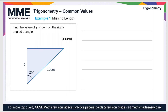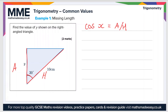Now let's look at an example question — finding a missing length. We need to find the value of y shown on the right-angle triangle. We have the angle, the hypotenuse (the long side), and the side alongside the angle that isn't the hypotenuse, which is the adjacent side. Since we have the angle, hypotenuse, and adjacent, the function we need is cosine: cos x = adjacent over hypotenuse.